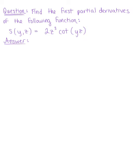Find the first partial derivatives for the following function. S of yz is equal to 2 times z cubed times cotangent of yz. We can see that this is a function of y and z, so we'll have two partial derivatives.